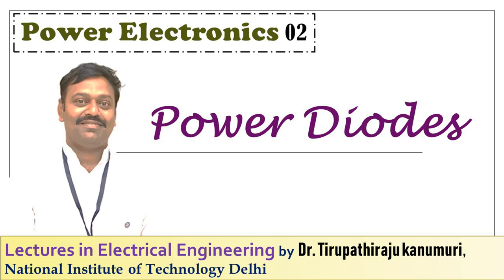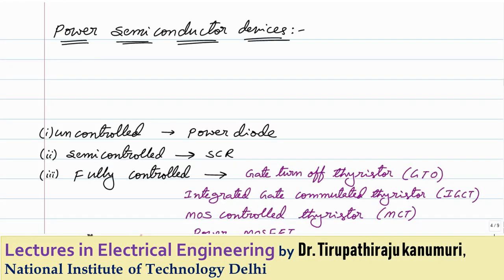Hi all, today we are going to start the power semiconductor devices. As part of that, we are going to see the power diode in detail today. Before going to the power diode, let us see the different types of power semiconductor devices. Depending on how they are controlled, they can be classified into three types: uncontrolled, semicontrolled, and fully controlled.